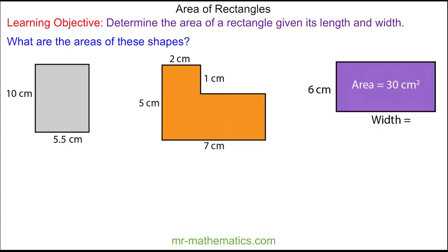Do you want to try and work out the area of the gray rectangle and the orange compound shape? You can pause the video and resume it when you're ready. For the gray rectangle we have 5.5 centimeters multiplied by 10 centimeters. 5.5 times 10 is 55 centimeters squared.